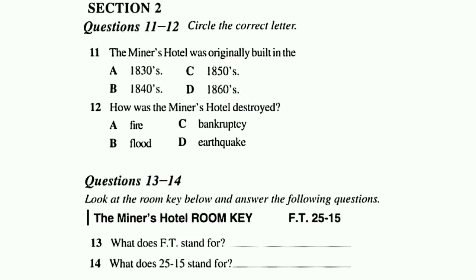Our hotel is divided into two buildings, one called the Gold Tower and the other is named the Fortune Tower. You will be staying in the Fortune Tower on the 25th floor, complete with great views of the city. Your room is the best room in the hotel, complete with private living room and hot tub. Here is your room card. On the card, it will say FT, meaning Fortune Tower. On the bottom of the card, it will say 2515. The 25 stands for the 25th floor, and the 15 stands for the 15th room on that particular floor.